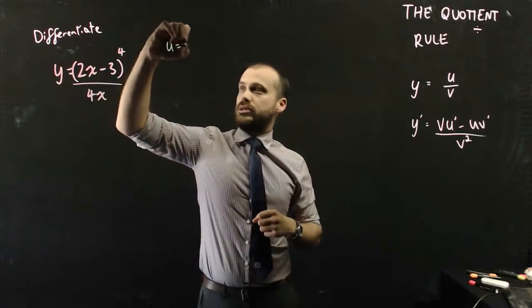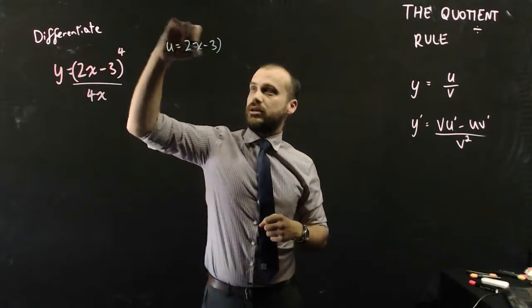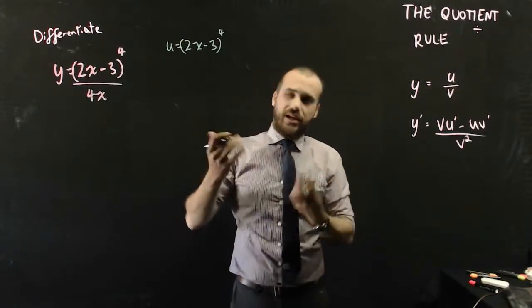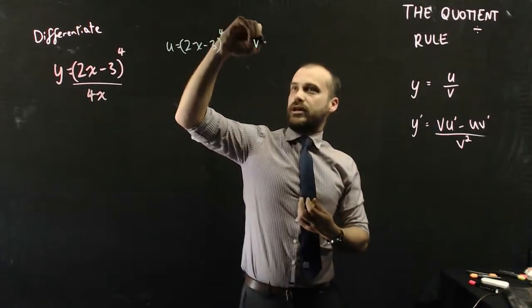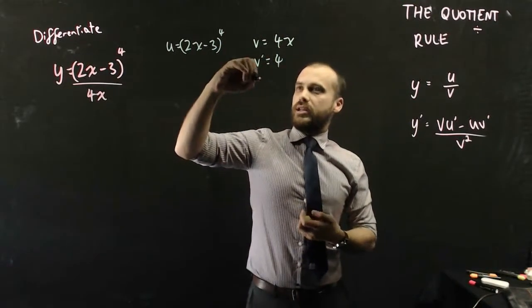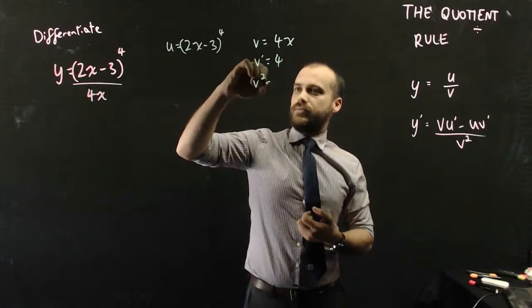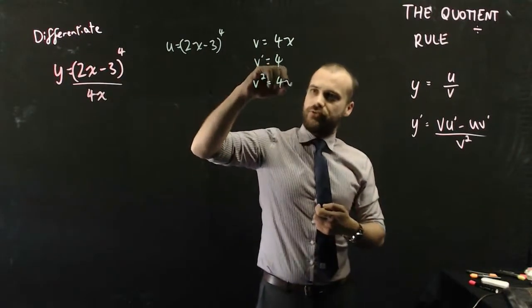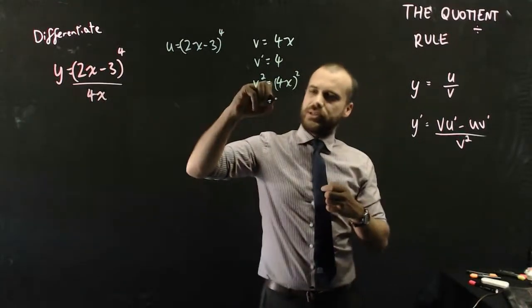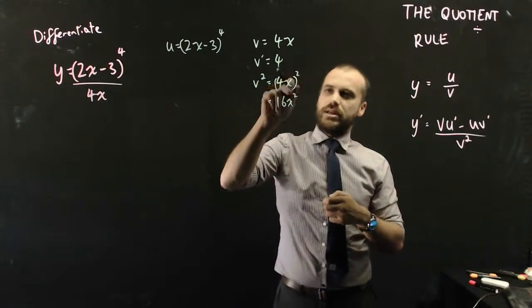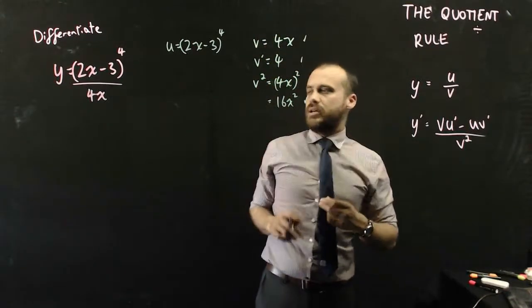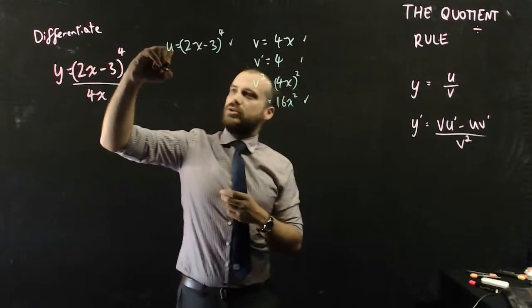So, u is the thing on the top. So, u is equal to (2x minus 3) to the power of 4. And I'm just going to come back to u dash in a minute because that's the hardest one. So, v is equal to 4x, v dash is equal to 4, and v squared, well, v squared is 4x squared. I should probably just fix that up. So, it's like 16x squared, so 4 squared and x squared. So, I have v, I have v dash, I have v squared, I have u, and now I need u dash.